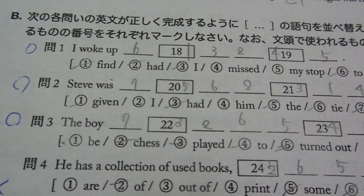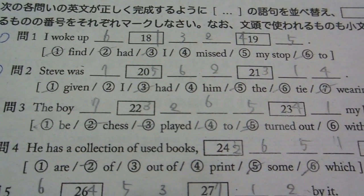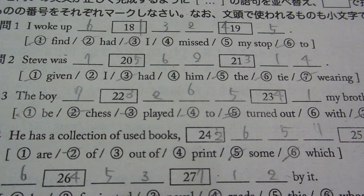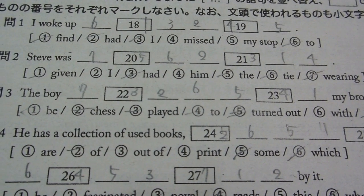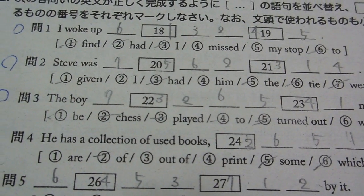Have a look, you sort of get the idea, right? Look at number one there, I woke up and you've got to make the sentence. So it would make sense just to take the words that are in the brackets there and put them on each line, wouldn't it? And make the sentence, write the sentence.